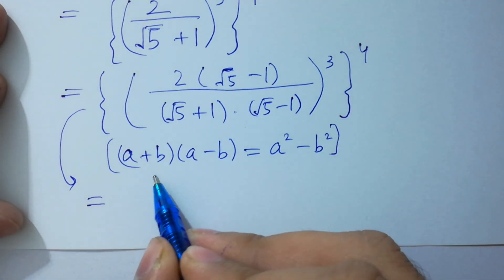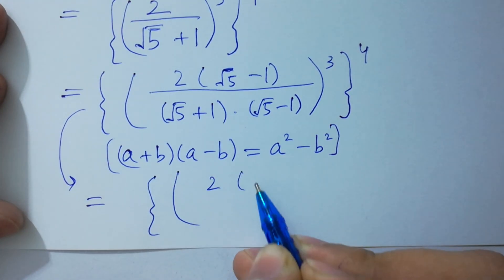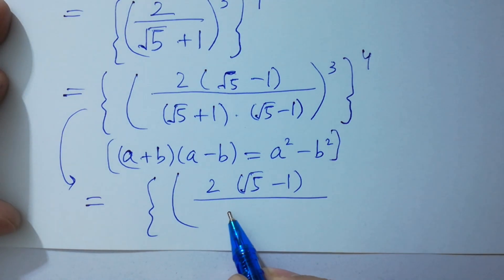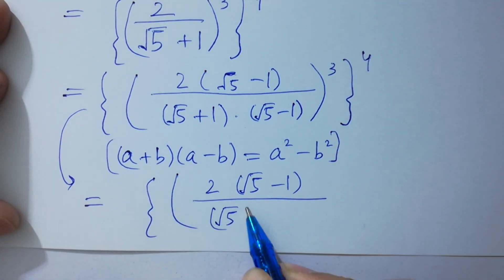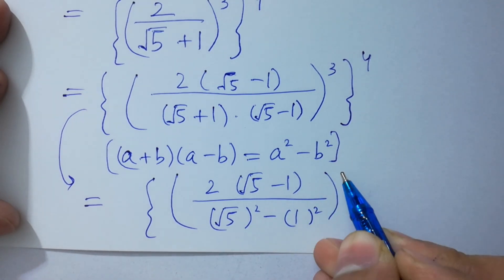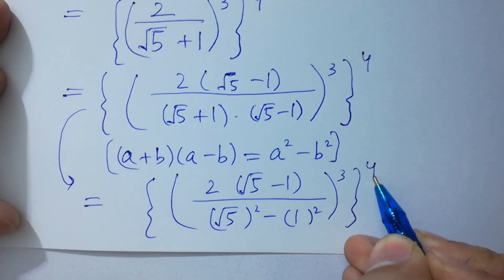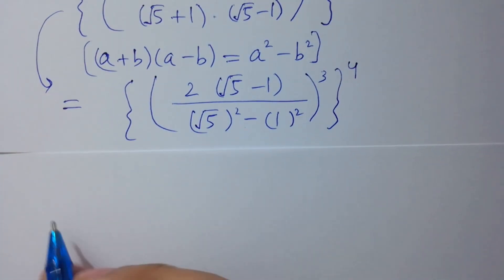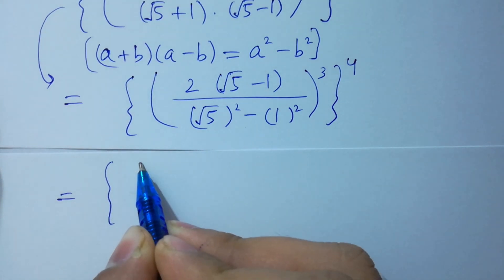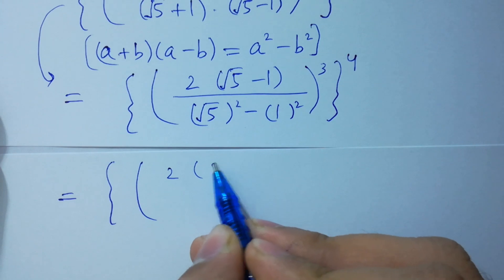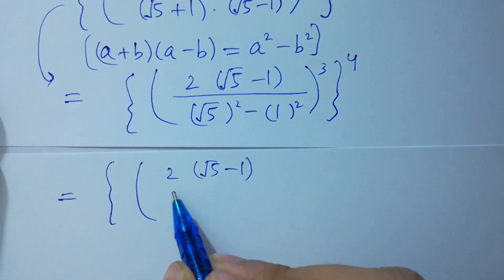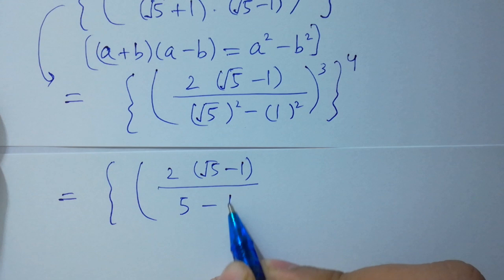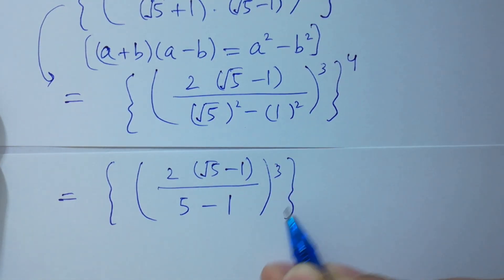2 times square root of 5 minus 1, over square root of 5 squared minus 1 squared, to the power 3, to the whole power 4. Simplifying: square roots cancel from square root of 5 squared giving 5, and 1 squared is 1, to the power 3, to the whole power 4.